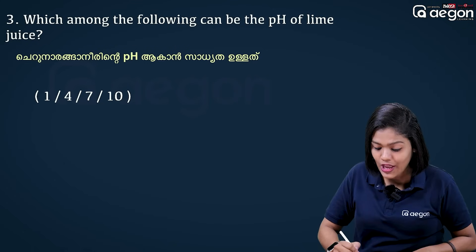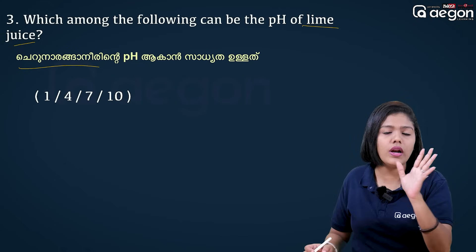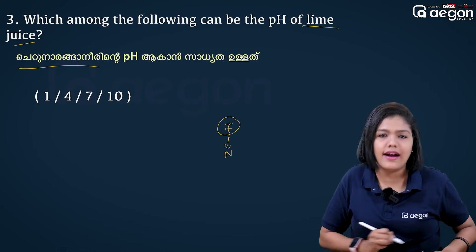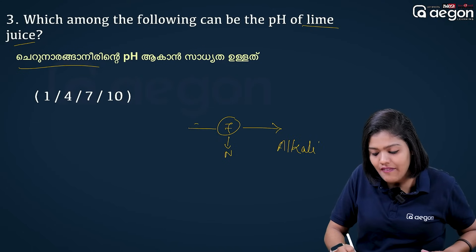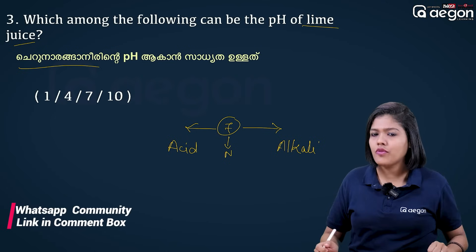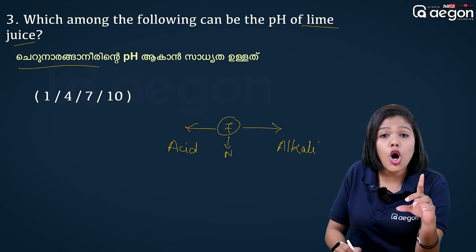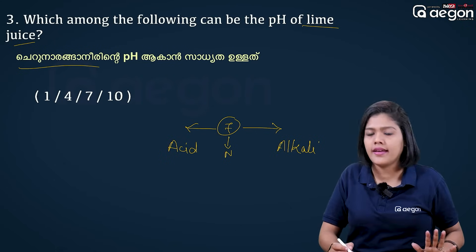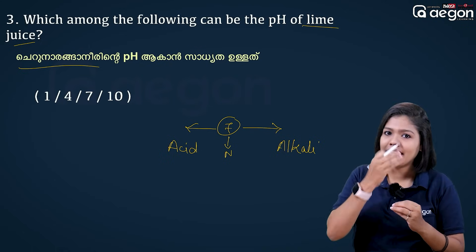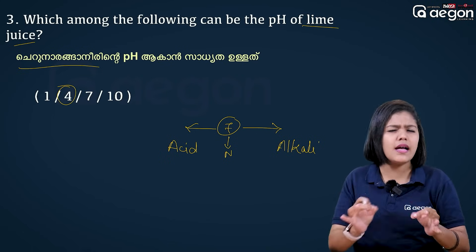What is the pH of lime juice? If you look at the pH scale, lime juice is acidic — it is not neutral. Looking at the pH scale, lime juice has a very acidic value. The topic of pH is 100% in the exam.